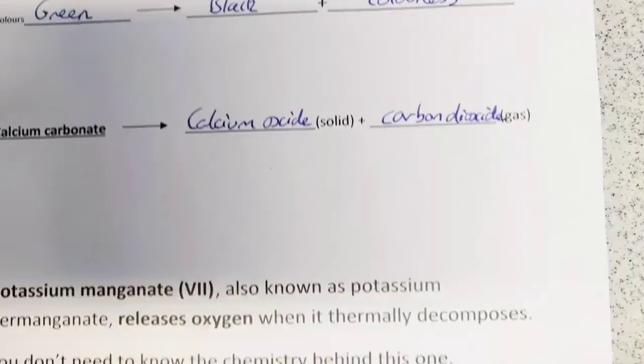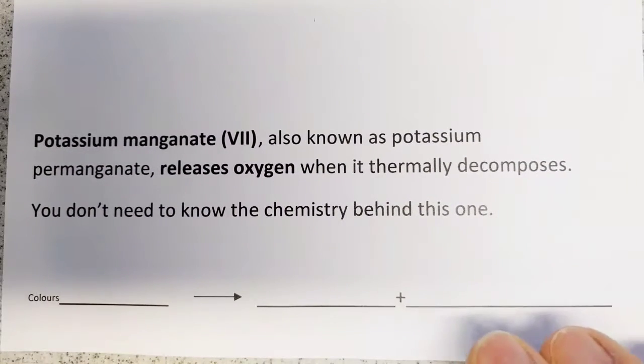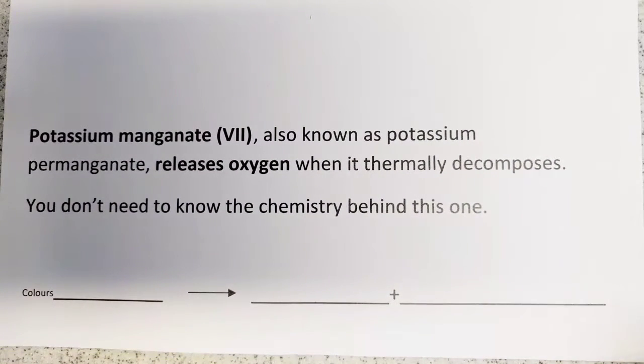The third example, which you see more in gases of the air, is potassium manganate 7, which in the olden days when I was younger was called potassium permanganate. This releases oxygen when it thermally decomposes. You don't need to know the chemistry behind any of this, but it's nice to have a bit of an idea about some of the colors.